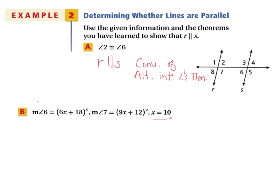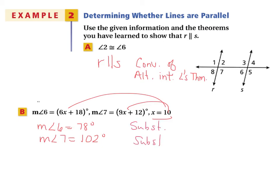In part B, we substitute x equals 10. By substitution, the measure of angle 6 equals 60 plus 18, which is 78 degrees. The measure of angle 7 equals 90 plus 12, which is 102 degrees. Both of those steps use substitution as the reason. Now, angle 6 and angle 7 — what type of angles are they? They're supplementary, so the measure of angle 6 plus the measure of angle 7 equals 180 degrees.